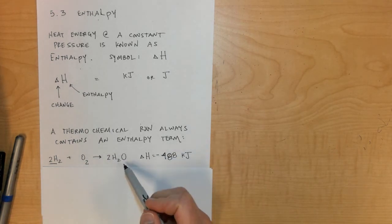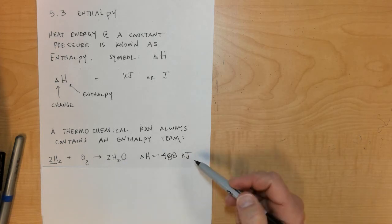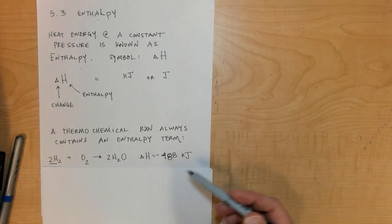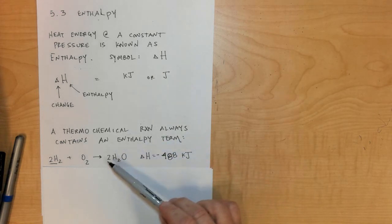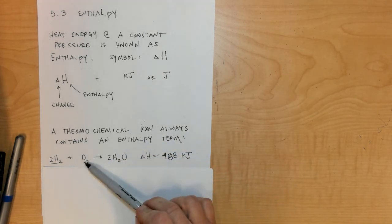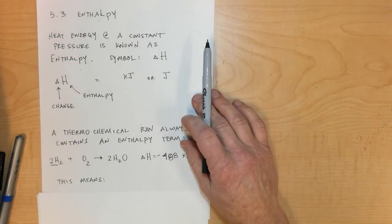For every 488 kilojoules that are released, you can know that two moles of water are produced, one mole of O2 was reacted, and two moles of H2 were reacted. This means many relationships stoichiometrically in the equation are dependent on this delta H or enthalpy term.